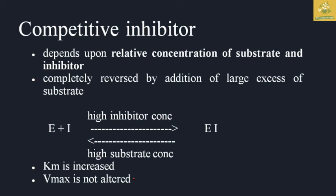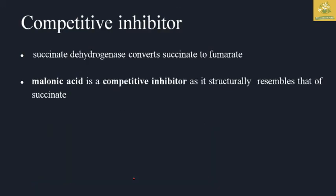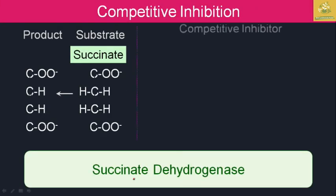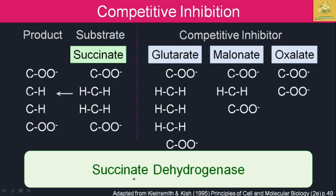Competitive inhibition is a reversible process. At high inhibitor concentration the enzyme forms an enzyme-inhibitor complex; at high substrate concentration the enzyme releases the inhibitor. An example is malonate as a competitive inhibitor of succinate dehydrogenase — malonate's structure resembles succinate and blocks the conversion of succinate to fumarate.